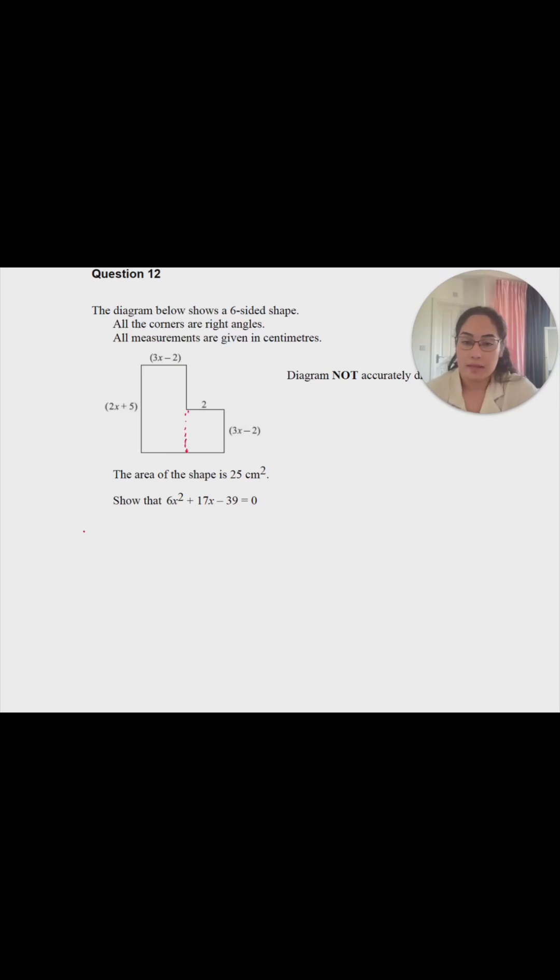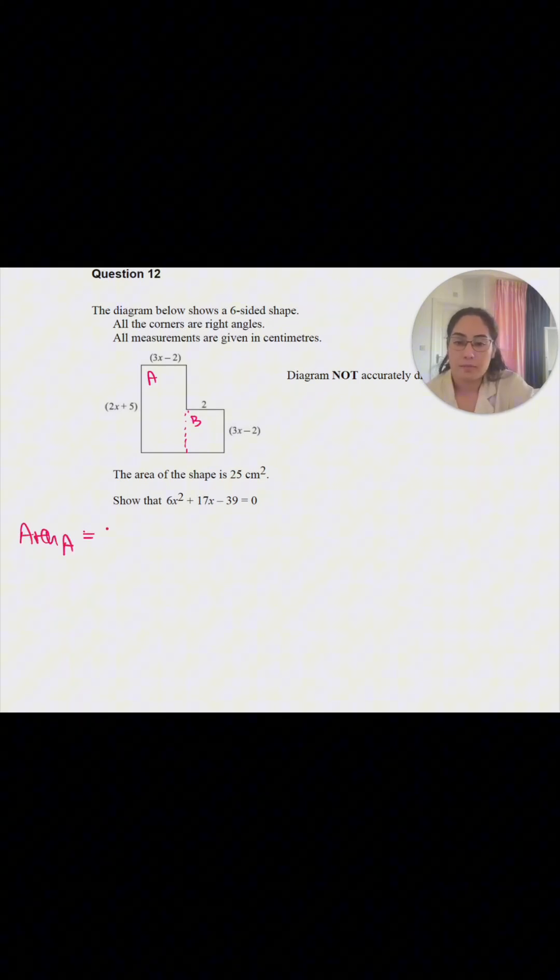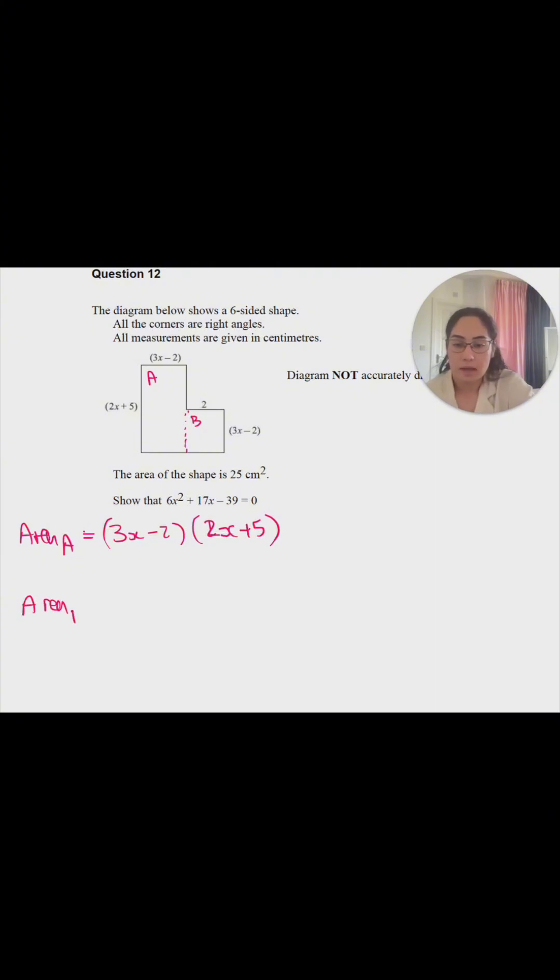If I split it down this way and call this A and call this B. Area A is a rectangle, so we're going to do (3x - 2) multiplied by (2x + 5). And Area B is going to be 2 multiplied by (3x - 2).